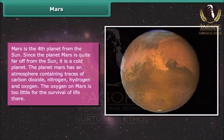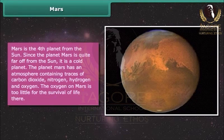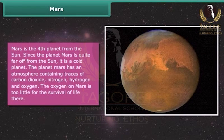Since the planet Mars is quite far off from the Sun, it is a cold planet. The planet Mars has an atmosphere containing traces of carbon dioxide, nitrogen, hydrogen, and oxygen. However, the oxygen on Mars is too little for the survival of life there.